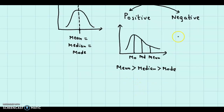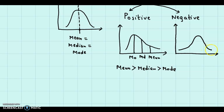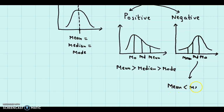The exact opposite would be applicable for a negatively skewed distribution. Let us draw the axis. In this case, the distribution will have a negative tail — more frequencies would be on the lower side. This would be the mode, here we will have the median, and here somewhere we will have the mean. So, for this case, mean is less than the median and median is less than the mode.